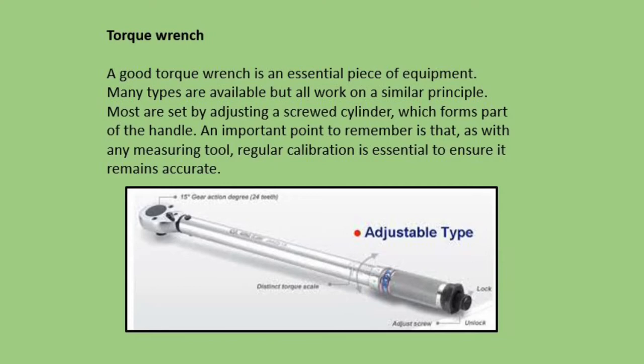Torque wrenches can be used for checking wheel torque settings to cylinder head bolt settings. An important point to remember is that, as with any measuring tool, regular calibration is essential to ensure it remains accurate.